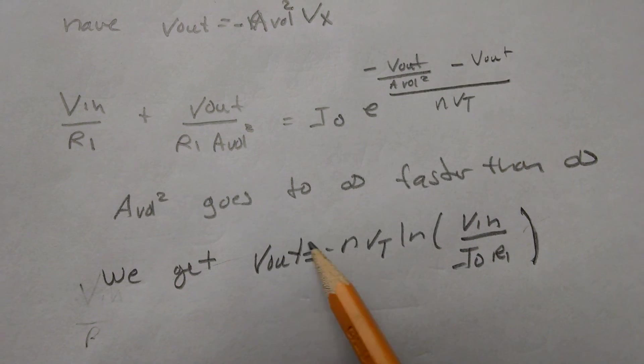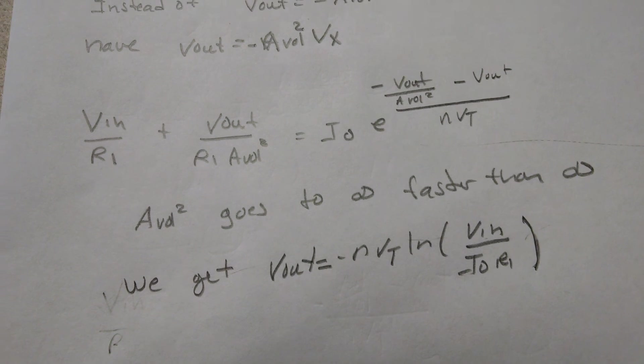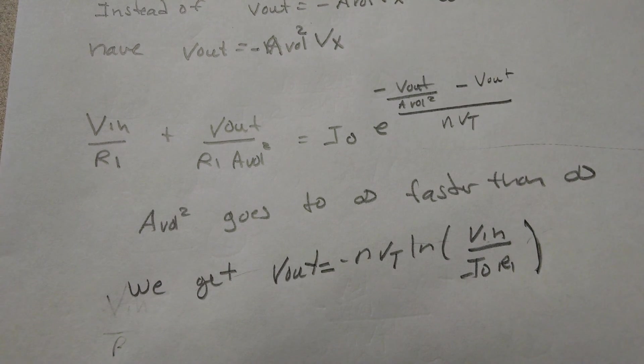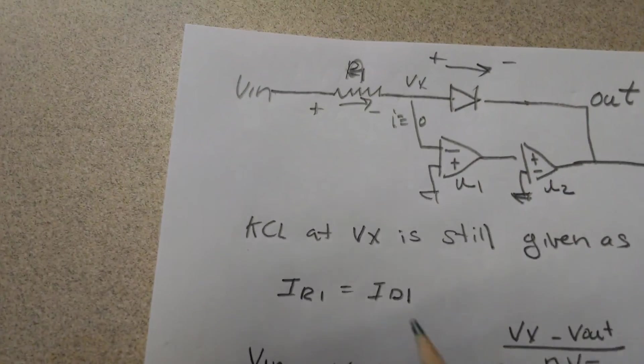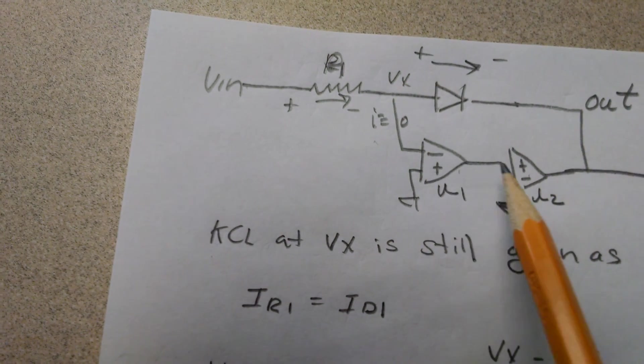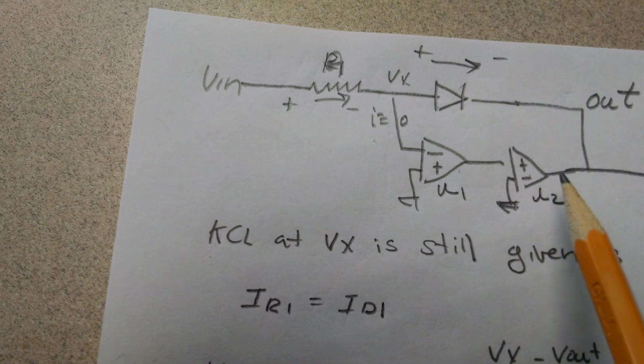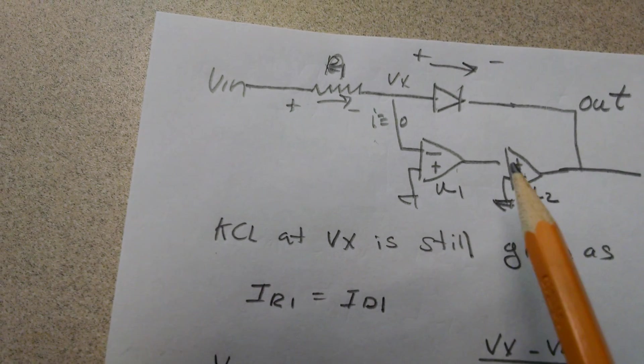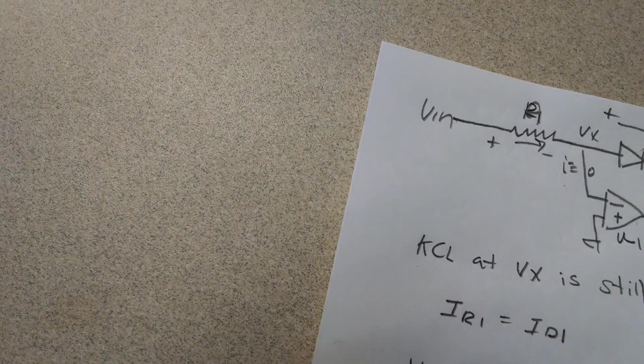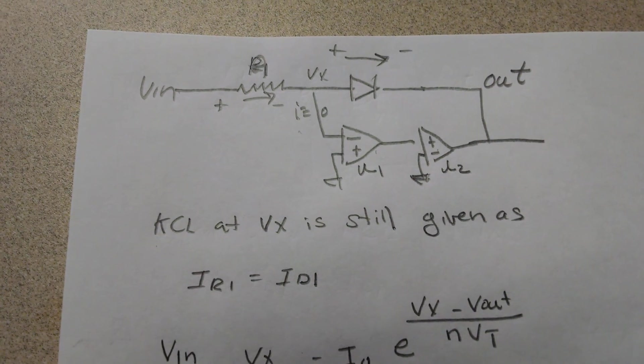So the thing is, when I chain these together, what I can get is a more accurate transfer function at the expense of having two more op-amps.